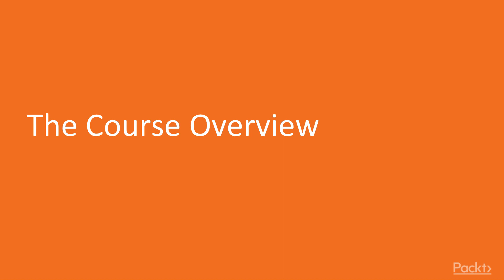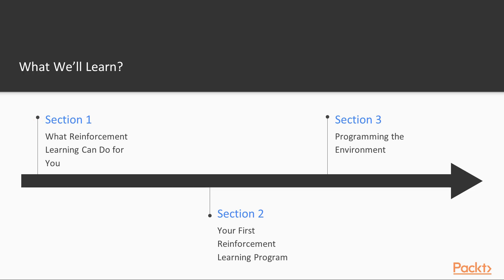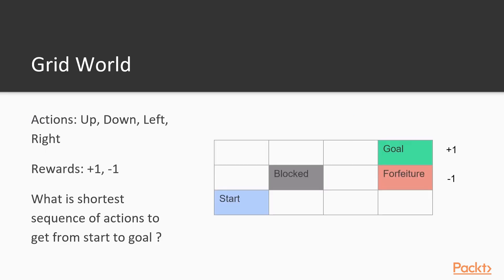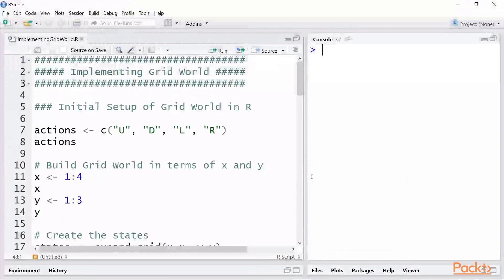This first video provides you with a glimpse of the entire course. In the first section, we introduce the notion of reinforcement learning and talk about the concepts of states, actions, and rewards. We look at a grid world example and demonstrate how to represent this reinforcement learning framework using R software and the RStudio IDE.